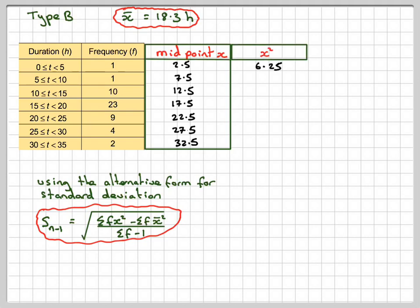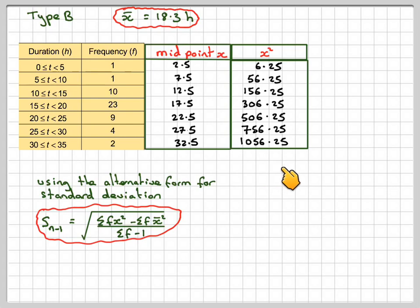And we'll need to square those midpoints. For example, the last one here is 32.5 squared, which gives 1056.25. Then each one of those occurs... this occurs one time, so one times that is 56.25. Ten times that is 1562.50, and so on.